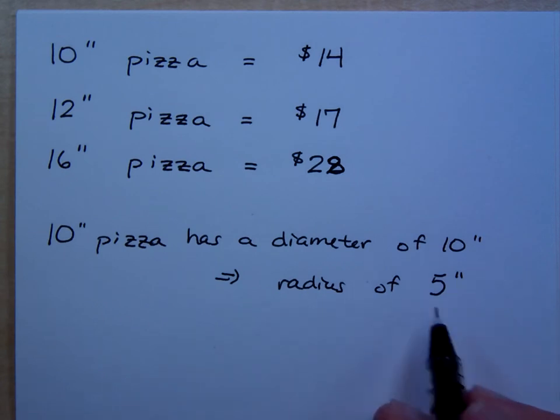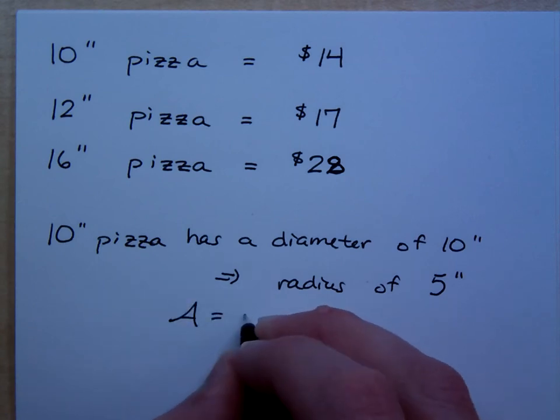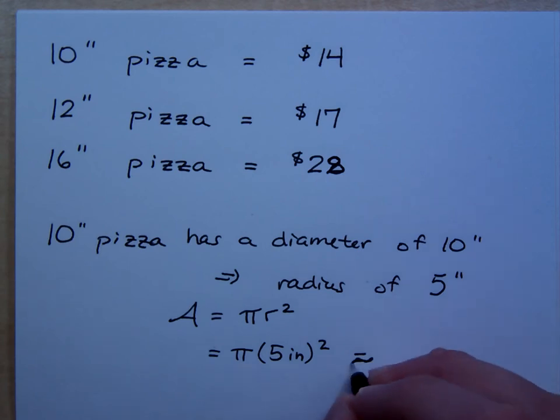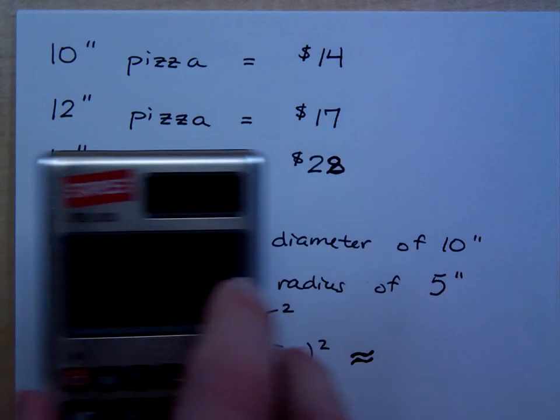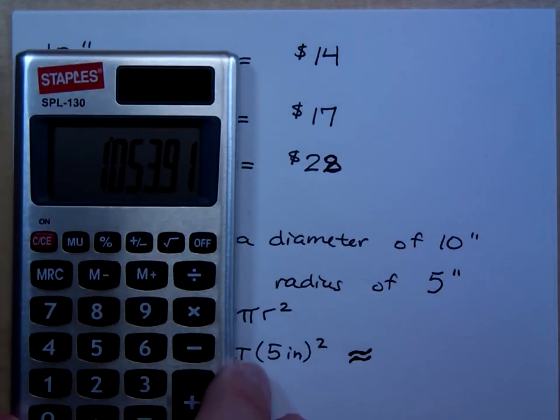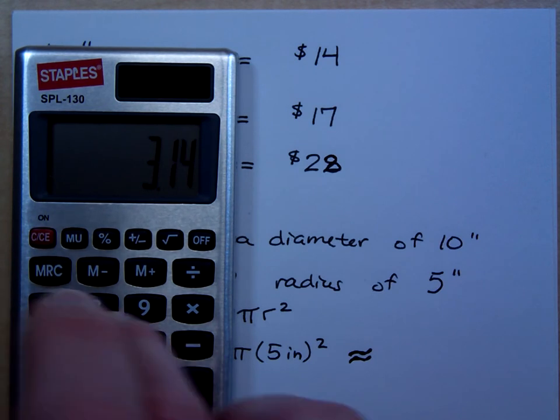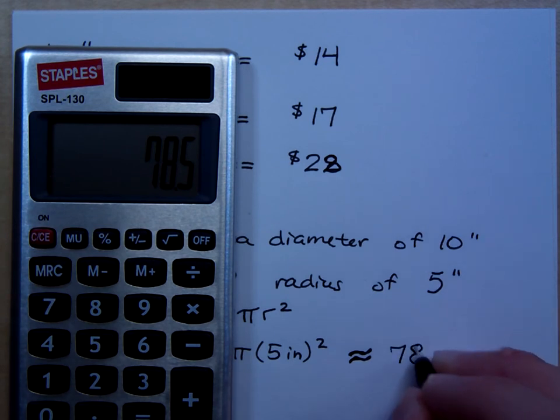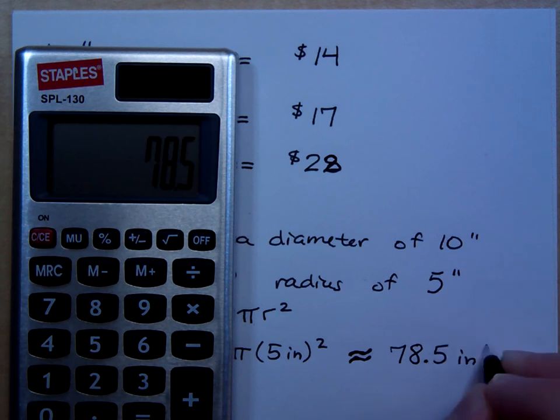So if this is the case right here, then the area for this pizza would be πr², which would be π times 5 inches squared. And when you put that into your calculator, what do you come up with? What is this approximately equal to? We'll just round to the nearest hundredths here. So you have 3.14 times, what's 5 squared? It's 25, right? So I come up with about 78.5 square inches of pizza. Are you with me on that?